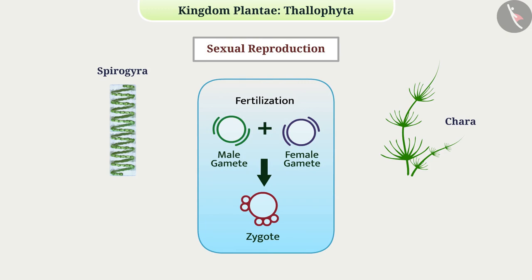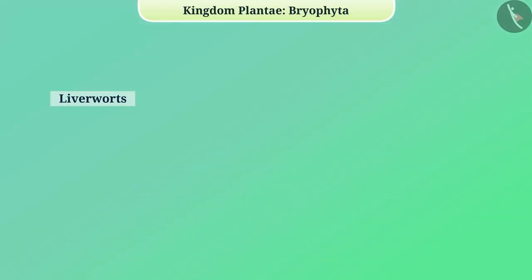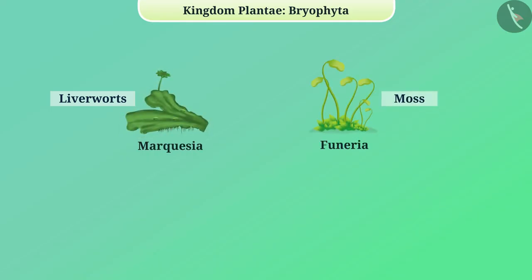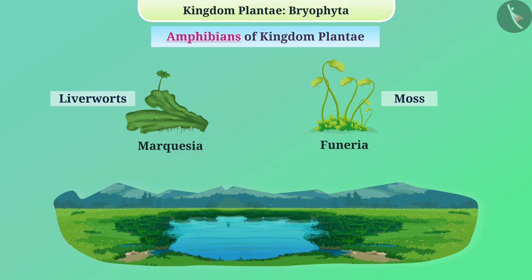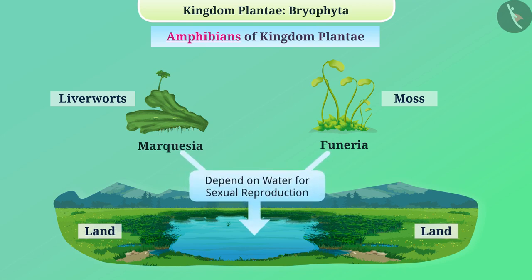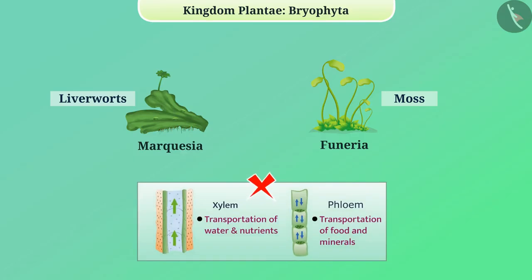Let's discuss Bryophyta. In this class, liverworts such as Marchantia and mosses such as Funaria are included. They are often found in moist and shady areas of hills. Bryophytes are also called the amphibians of kingdom Plantae because plants of this class live on land but depend on water for sexual reproduction. Their bodies do not have tissues for conduction of water and other substances.